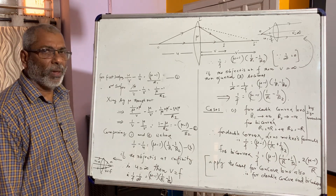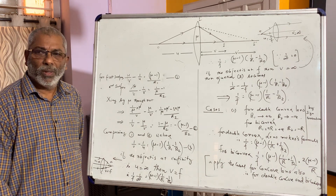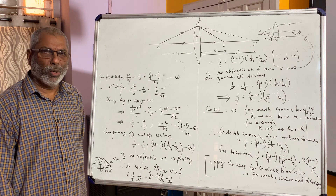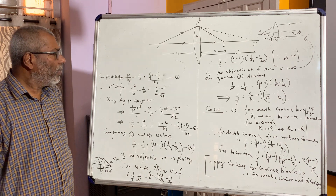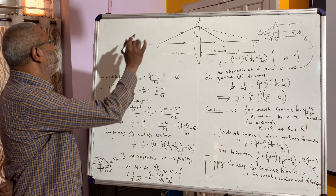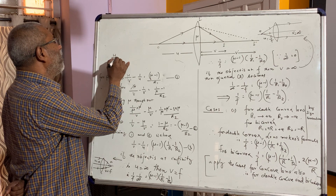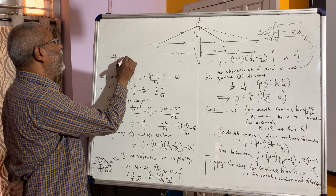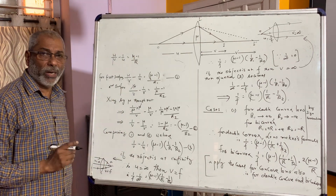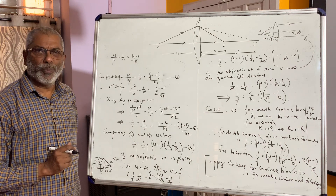Dear students, we have already discussed the refraction through a curved refracting surface, both convex and concave. The general refraction formula for a curved refracting surface has already been studied as: μ/V minus 1/U is equal to (μ minus 1)/R. Now we are going to discuss and derive the lens maker's formula, which is fully related to refraction through curved refracting surfaces.